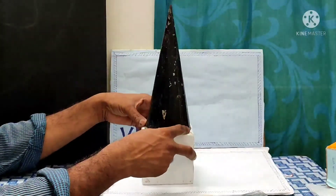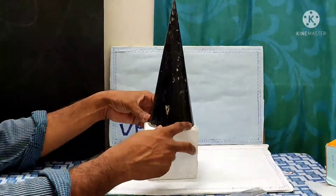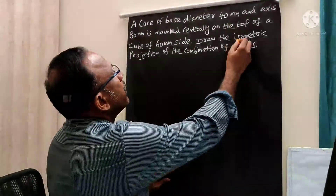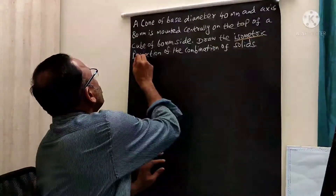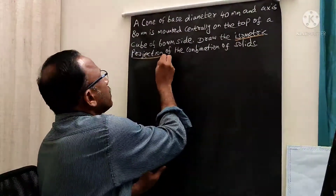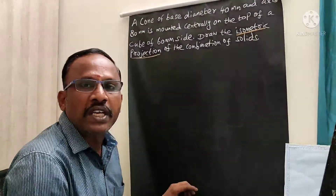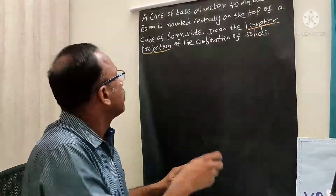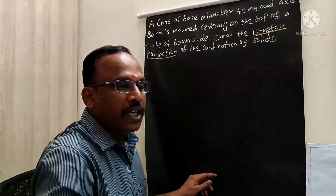Here is the isometric view and how we are going to draw it — that is the problem we are going to discuss. This is the main important thing — please make note here. In this problem, isometric projection is asked. So for isometric view we can take full length, but for isometric projections we need to use the isometric length.